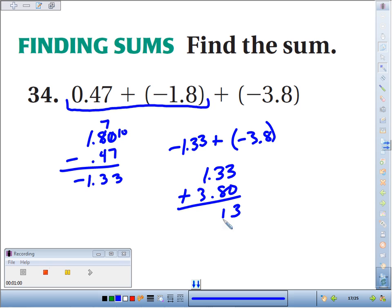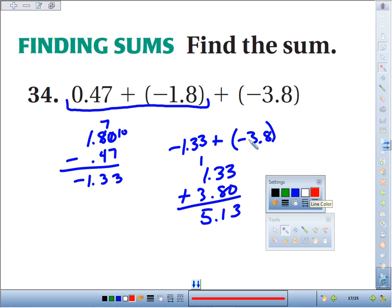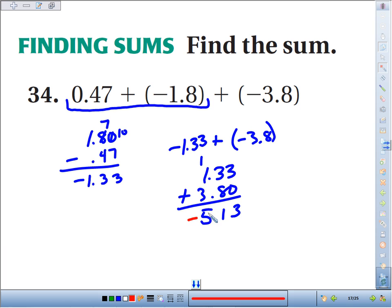We get 3. 3 and 8 is 11, carry the 1. 1 and 2 and 3 makes 5.13. But we have to say, well, if they're both negative, we give that symbol to our final answer. So it would be negative 5.13.